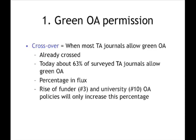Today about 63% of surveyed toll access journals give blanket permission: if you publish in our journal, you can deposit your peer-reviewed manuscript in a repository without asking for permission. A slightly larger number will permit green open access on request — they just don't give blanket permission in advance. Some new journals are deciding to add permission, while some are rescinding previous permission, and new journals that hadn't been surveyed before are also being added, explaining the fluctuation. Funder and institutional policies requiring open access deposits are bound to increase this percentage well above 63.